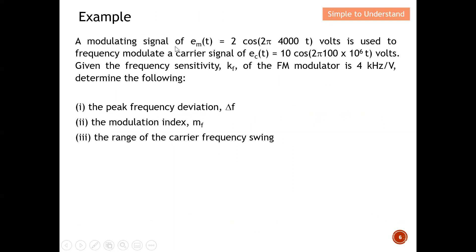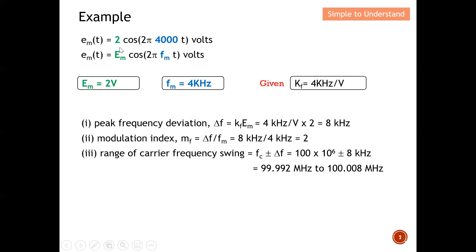Let's do an example. A modulating signal has the characteristics: Em = 2 V and frequency = 4000 Hz (4 kHz). It is used to frequency modulate a carrier signal. The carrier signal characteristics are given, with frequency sensitivity kf = 4 kHz/V. We need to determine the peak frequency deviation, the modulation index, and the range of the carrier frequency swing. From the modulating signal equation, Em = 2 V and the modulating frequency fm = 4 kHz.